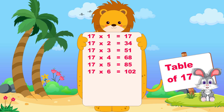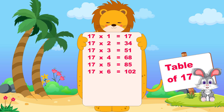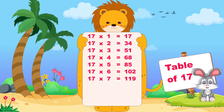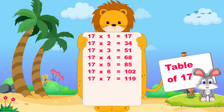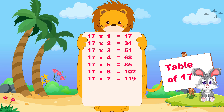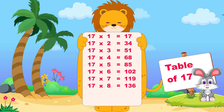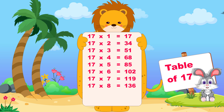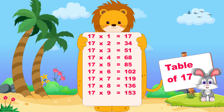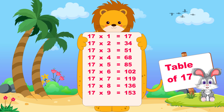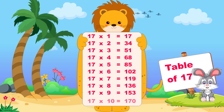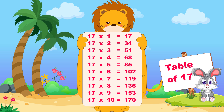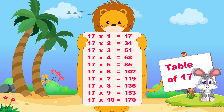Seventeen sixes are one hundred two, seventeen sevens are one hundred nineteen, seventeen eights are one hundred thirty-six, seventeen nines are one hundred fifty-three, seventeen tens are one hundred seventy.